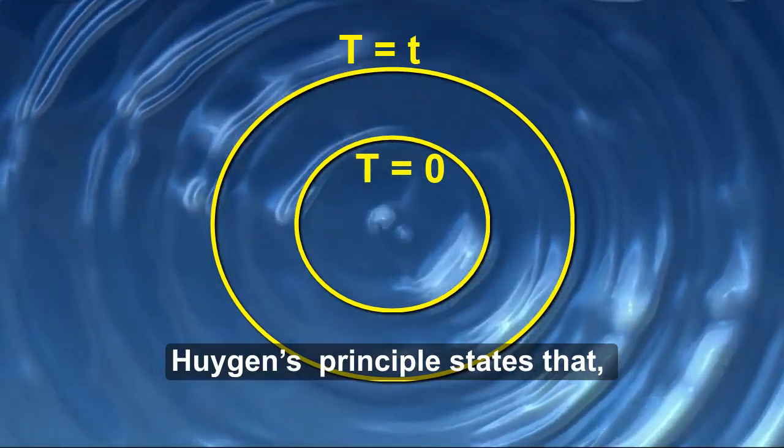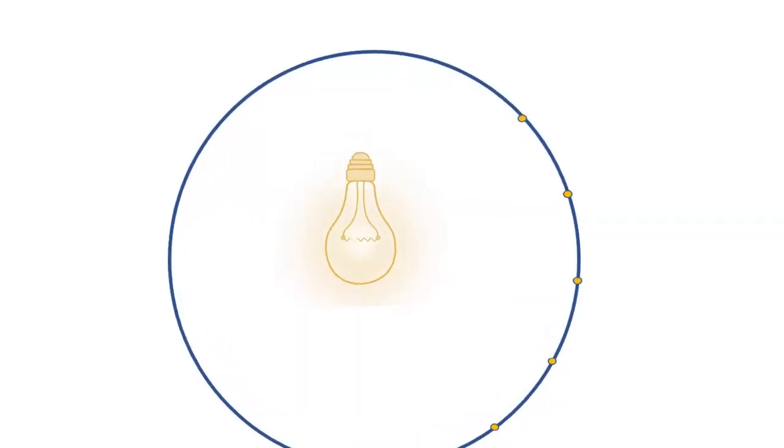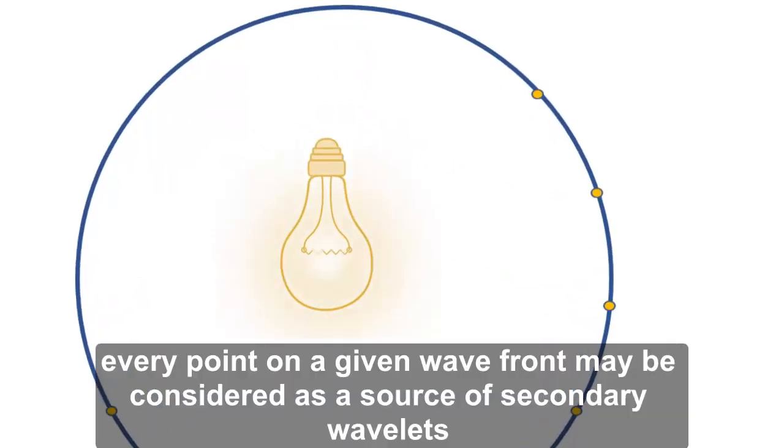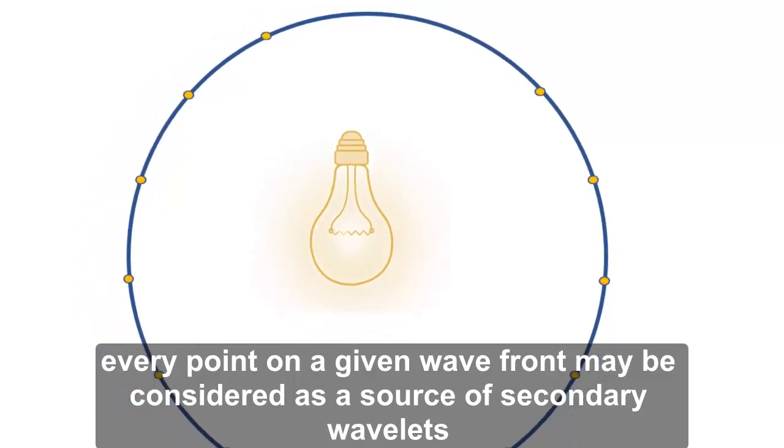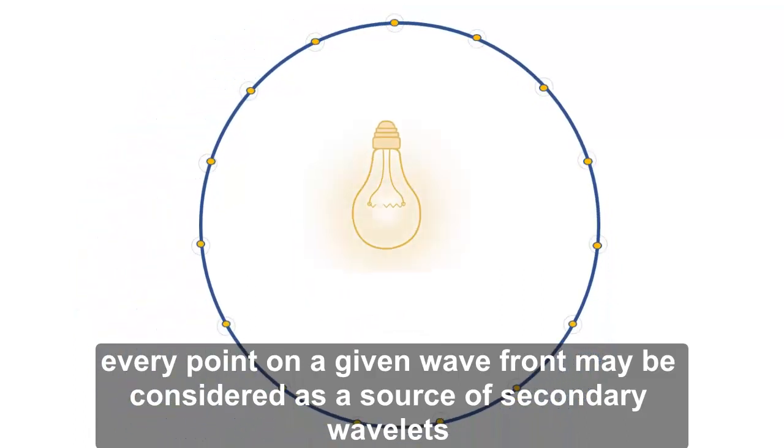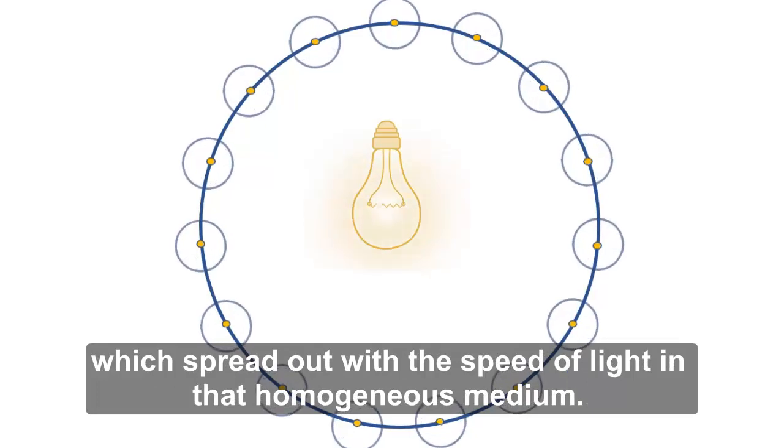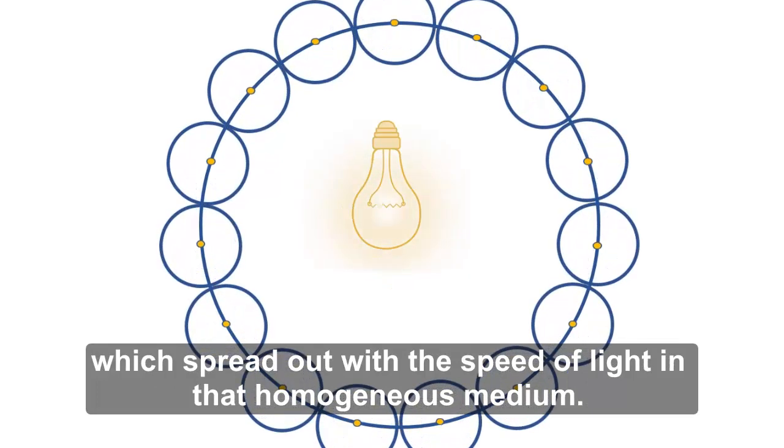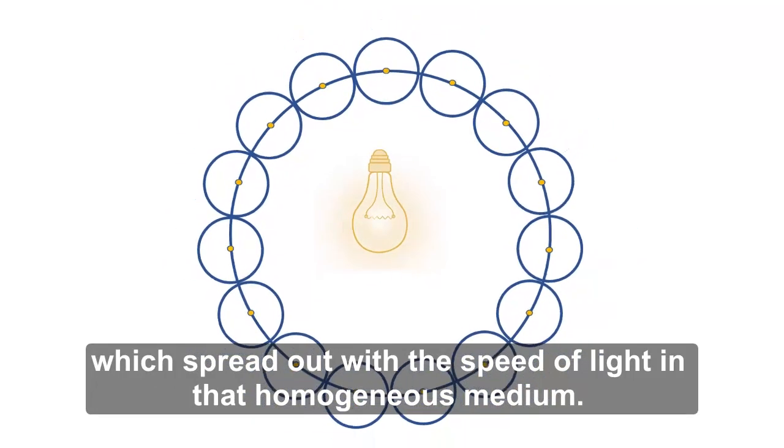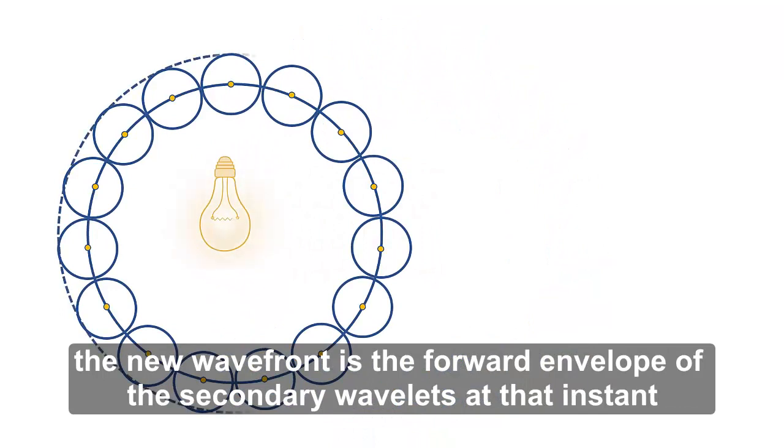Huygens' principle states that every point on the given wavefront may be considered as a source of secondary wavelets, which spread out with the speed of light in that homogeneous medium. The new wavefront is the forward envelope of the secondary wavelets at that instant.